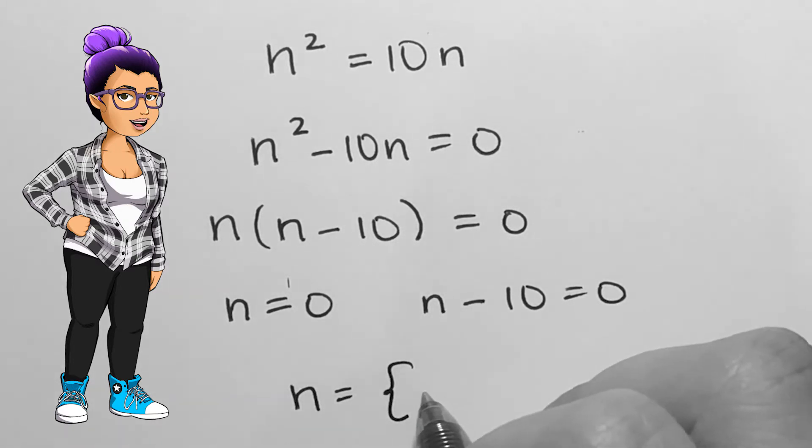Rather, n equals both zero and 10, which I'll write into roster notation using braces.